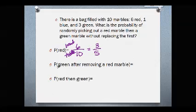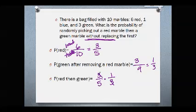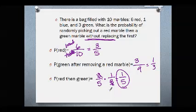Now for the green one, after removing the red marble, there are no longer ten marbles in the bag — there are now nine. How many green marbles are there? Three green marbles out of nine, which reduces to one-third. So what is the probability of getting a red then a green without replacing the first? The probability of getting red is three-fifths, multiplied by the probability of getting green after removing the red, which is one-third. Cross-canceling gives a one-fifth chance — a much better chance than the independent case.